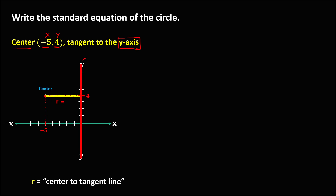We need to count at the opposite side to find the radius. Counting from the center to the y-axis: 1, 2, 3, 4, 5 — so the radius is equal to 5. Take note that the radius is always positive.